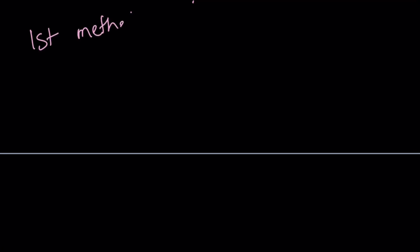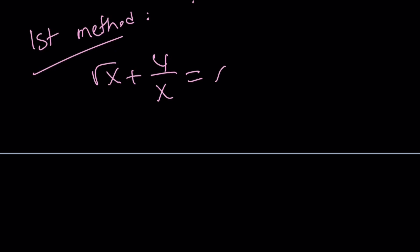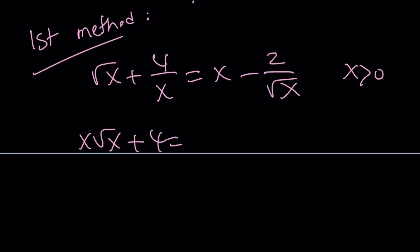Let's take a look at another method — the first method. I'm going to rewrite the original problem so you can see it. X is positive — don't forget that. I'm going to multiply both sides by x this time. That gives us x root x plus 4 equals x squared minus 2 times square root of x.